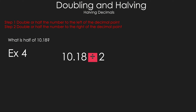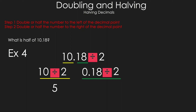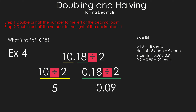The next halving example: separate the number, divide 10 by 2 to get 5, then divide 18 hundredths by 2. Using the money method: 0.18 equals 18 cents, half of 18 cents is 9 cents, which equals 0.09 — not 0.9, since 0.9 equals 90 cents. Combining gives the answer 5.09.